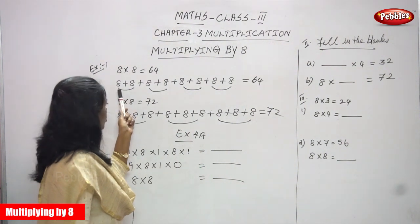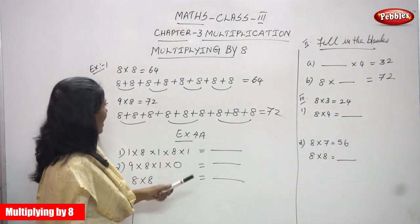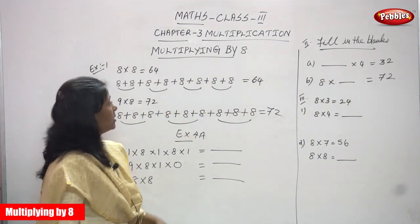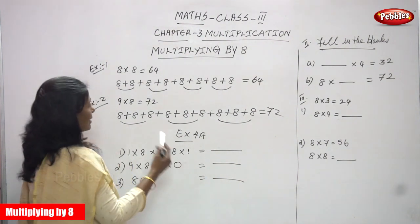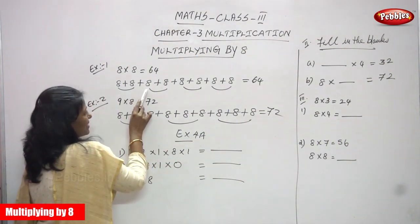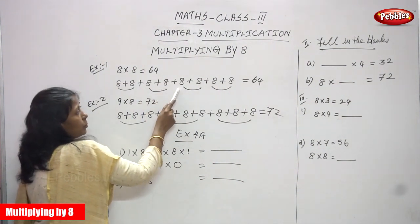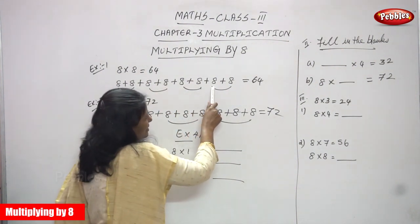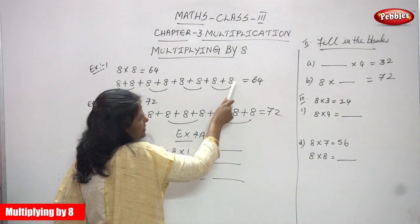So 8 plus 8 — I have written 8 eight times, making pairs of 2. I am adding each 8: 8 plus 8 is 16, 16 plus 8 is 24, 24 plus 8 is 32, 32 plus 8 is 40, 40 plus 8 is 48, 48 plus 8 is 56, 56 plus 8 is 64.